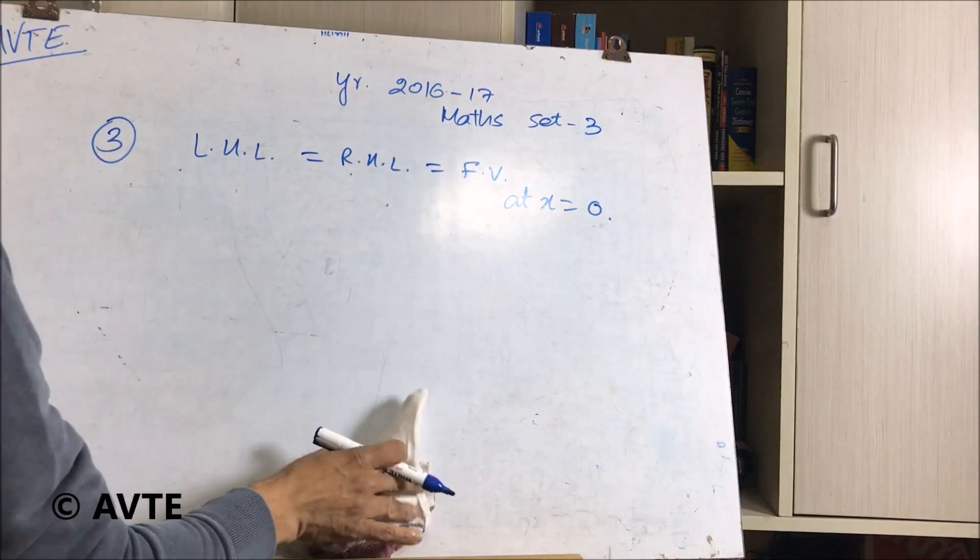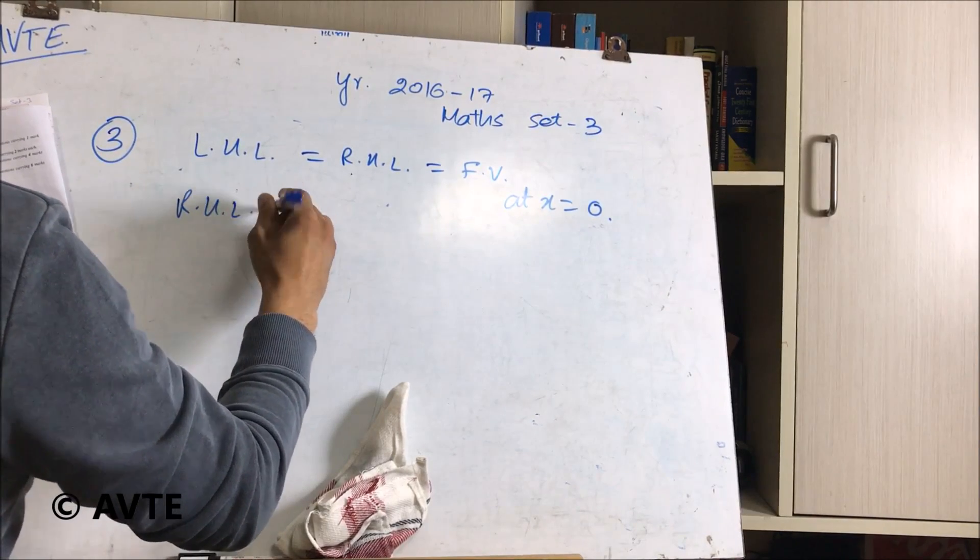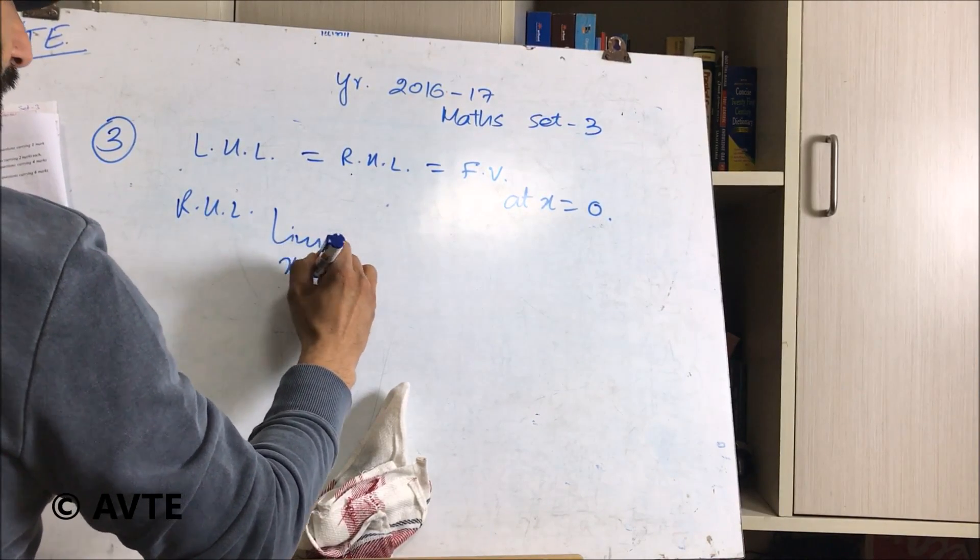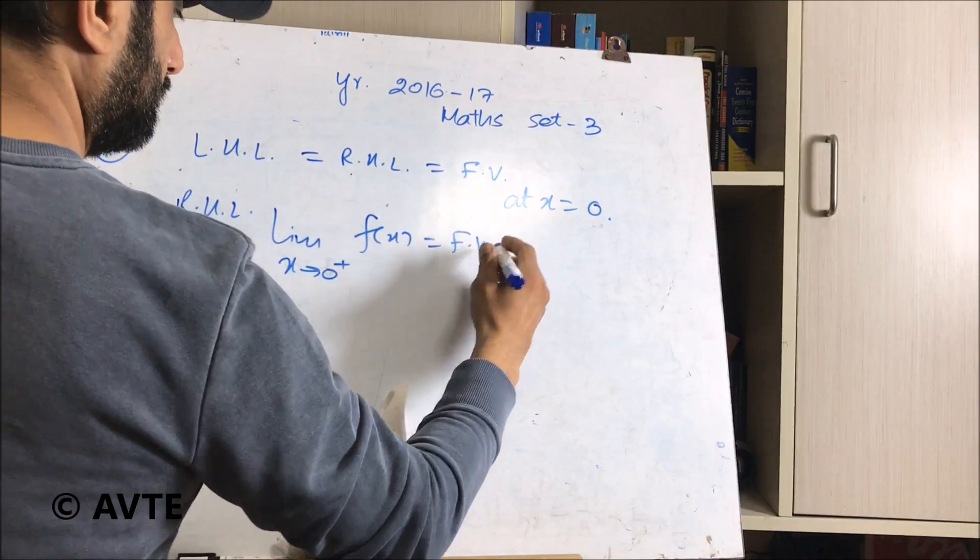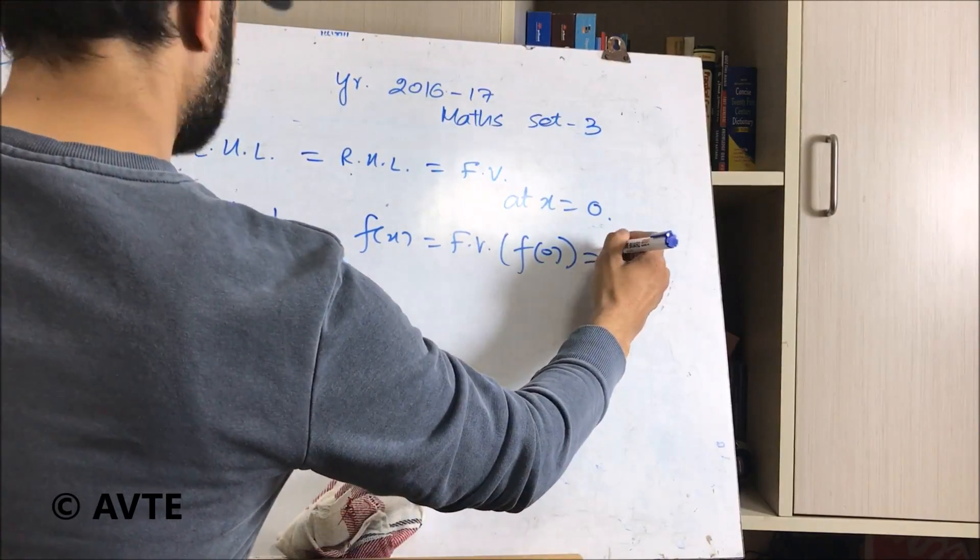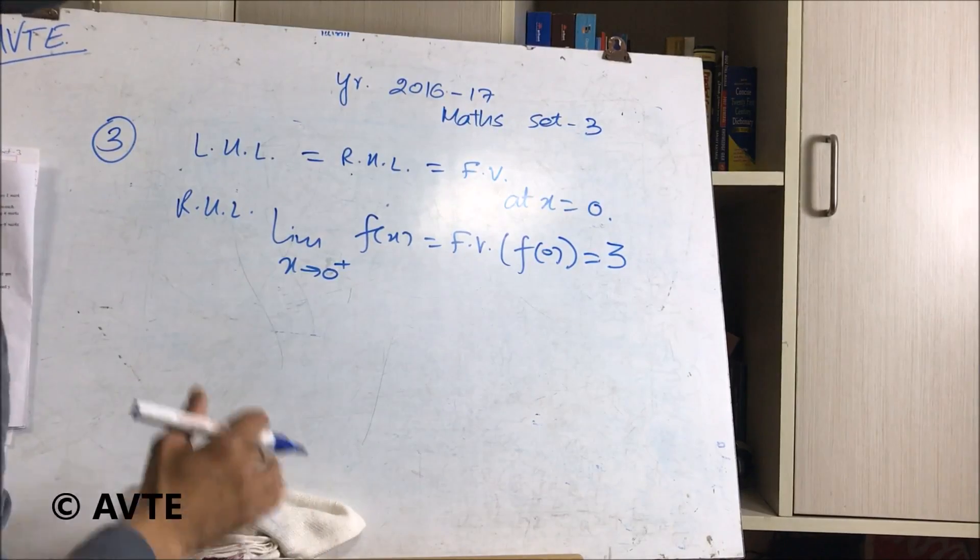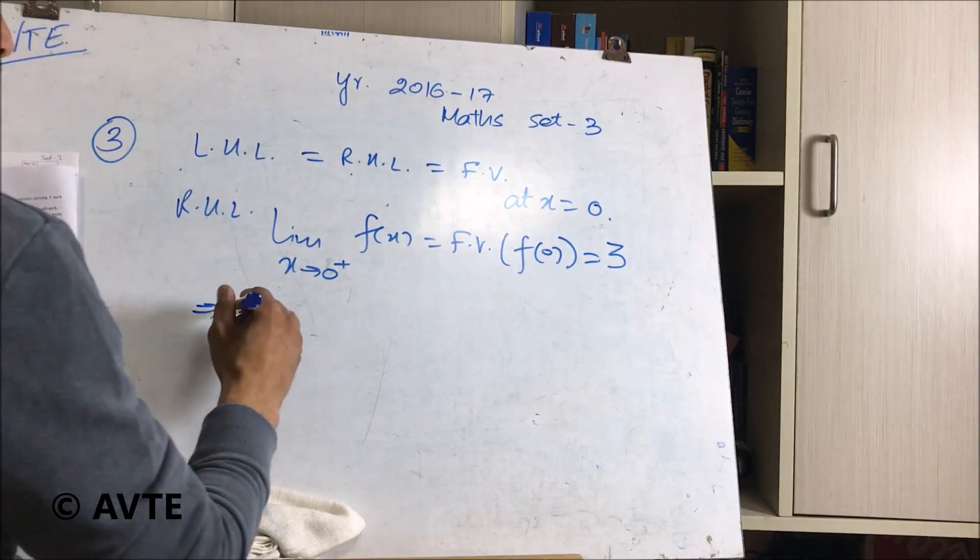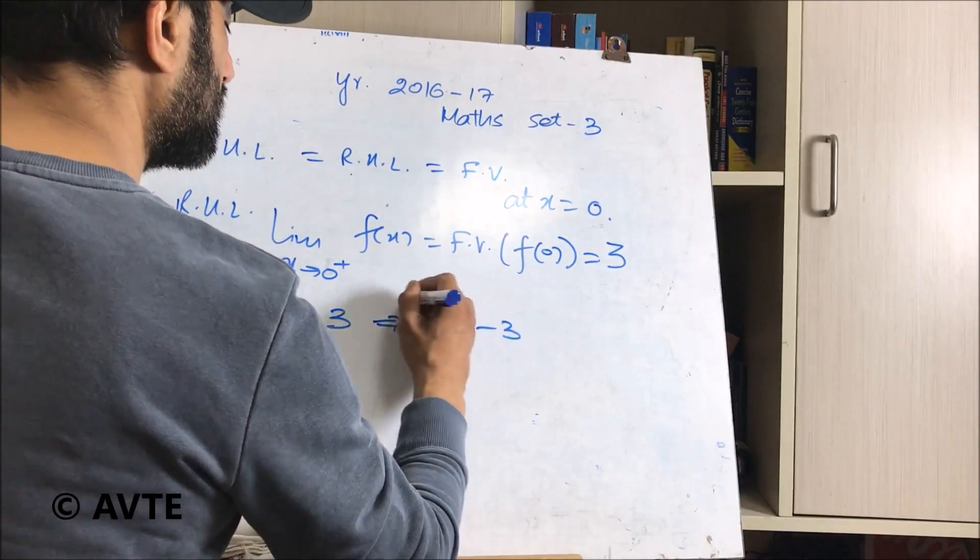We are given that the right-hand limit is equal to the functional value, that is f of 0, and that is equal to 3. So if we put left-hand limit equal to right-hand limit or the functional value, then clearly minus k equals 3. That is k is equal to minus 3.